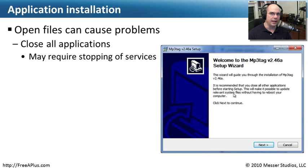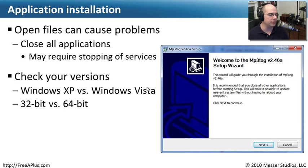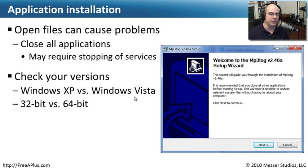When installing applications, make sure you don't have any open files. Installation programs may recommend closing all other applications before setup, because if a file is open, the installer may not be able to write to it, causing an aborted or improper installation. This may also require stopping some services. Additionally, check that the application is correct for your operating system — a program that works in Windows XP doesn't necessarily work in Windows Vista. Also, a 64-bit application must be installed on a 64-bit operating system; it won't run on a 32-bit OS.